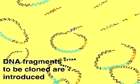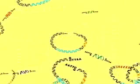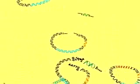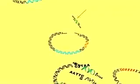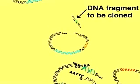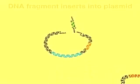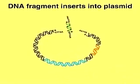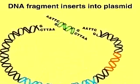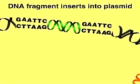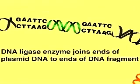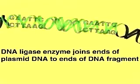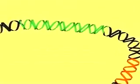Foreign DNA containing the sequence we wish to clone is digested with ECO-R1 and then mixed with the cleaved vector. The sticky ends of the foreign and plasmid DNA molecules hybridize, and then are sealed into phosphodiester linkages by the enzyme DNA ligase, creating a recombinant plasmid.